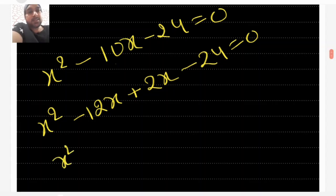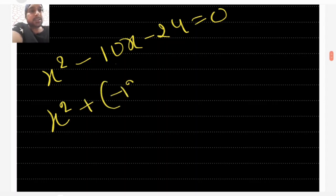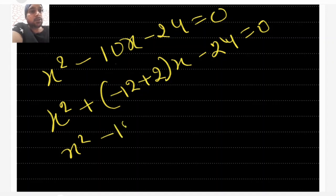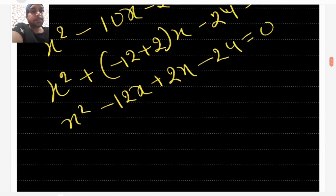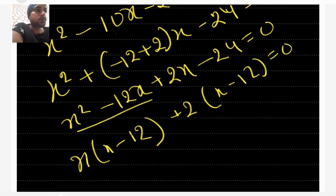You can write it this way to avoid confusion: x² - 12x + 2x - 24 = 0. Now take x common from the first two terms to get x(x - 12), and take +2 common from the last two terms to get +2(x - 12) = 0.